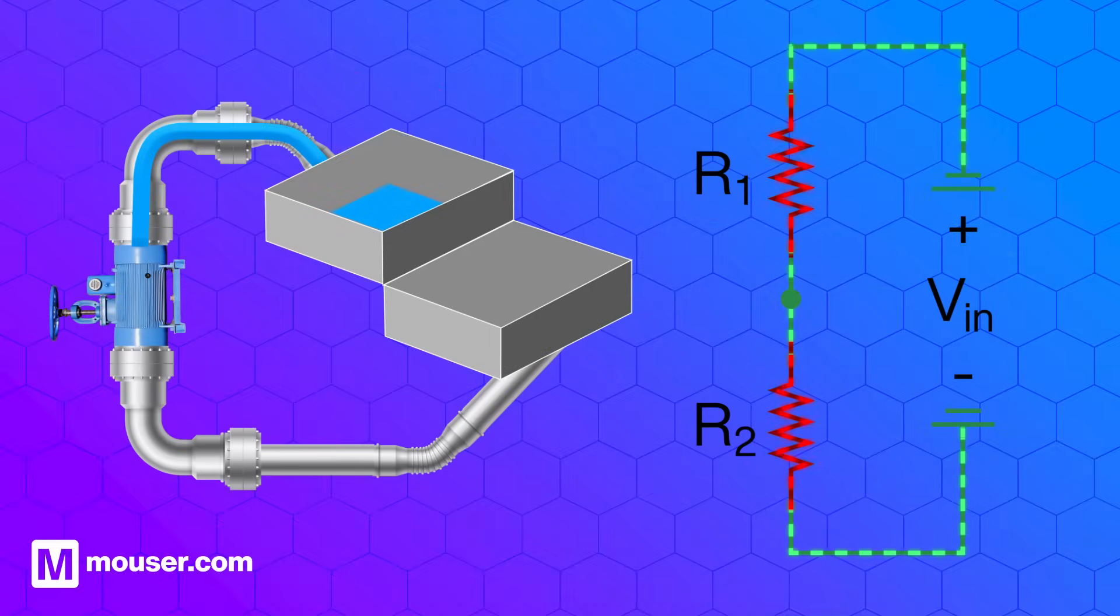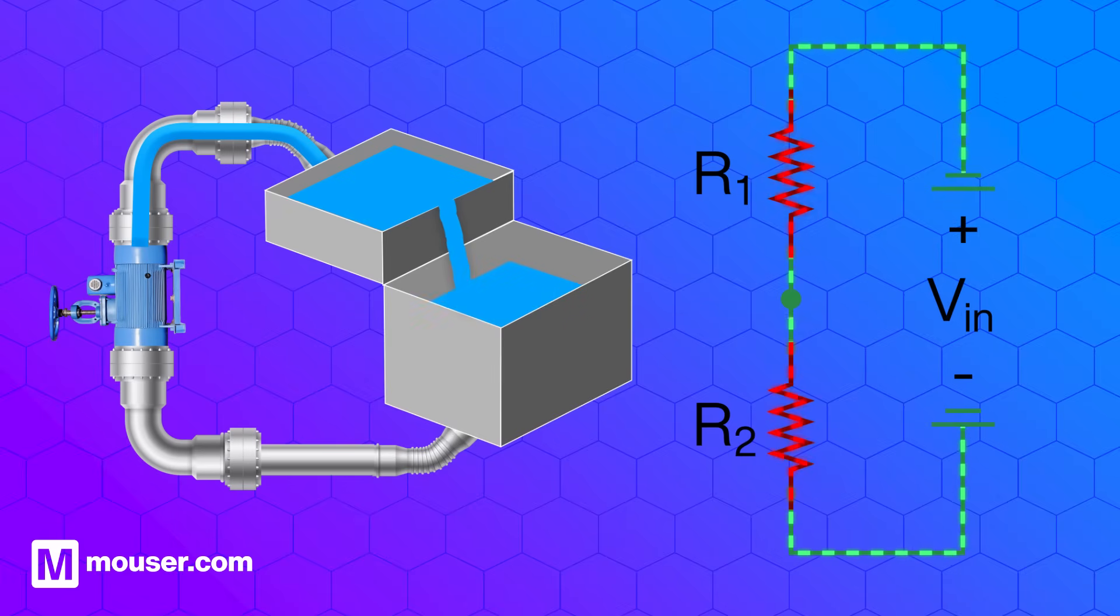You can think of a voltage divider like a fountain cascading water down two steps. The water drops a certain amount depending on the height of the steps. The total height is divided across the two steps.